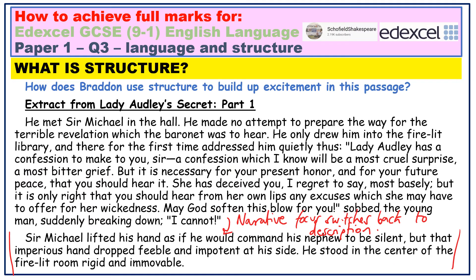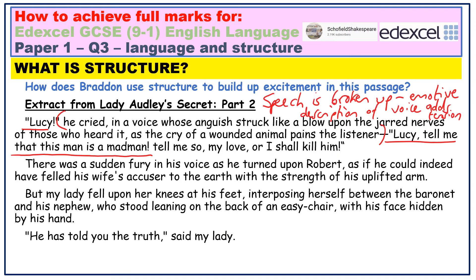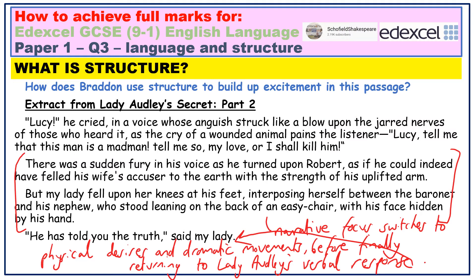Notice how the narrative focus switches back from dialogue to description. We as readers continue to have to wait to hear the effects of Lady Audley's confession on her husband. Tension is built through the description of Sir Michael's preliminary feelings of shock — if his imperious hand is already feeble and impotent, imagine how he will react when he actually knows what has happened. Note that Sir Michael's speech is split up into two parts to give the writer the opportunity to describe the pain of his voice before hearing his reaction in full. And then we have two further paragraphs which describe dramatic physical desires and reactions before, in the final paragraph, Lady Audley speaks out.